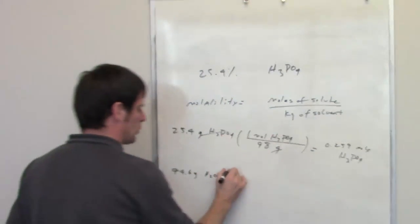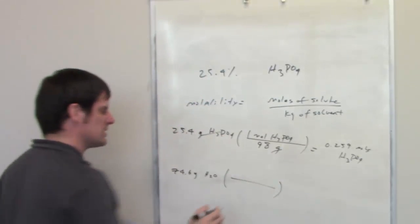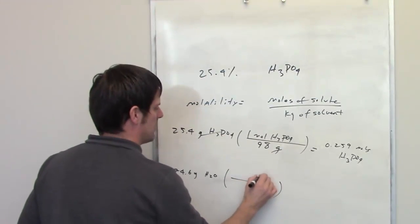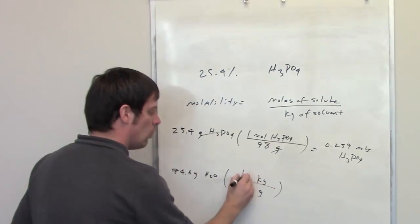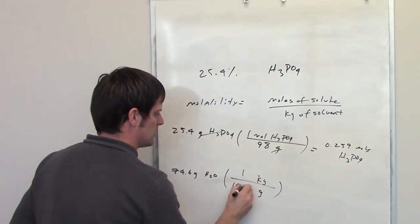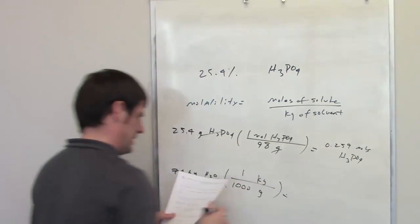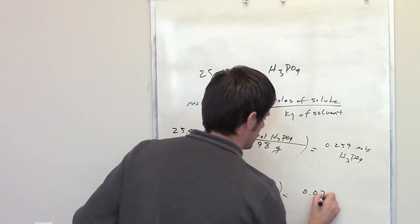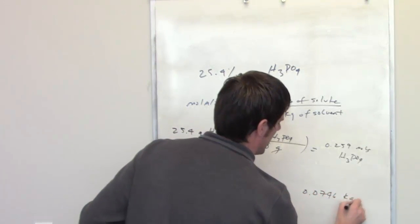74.6 grams of water, how many kilograms is that? I'll put grams in the denominator and kilograms in the numerator. One kilogram is equal to 1,000 grams. That gives me 0.0746 kilograms of water.